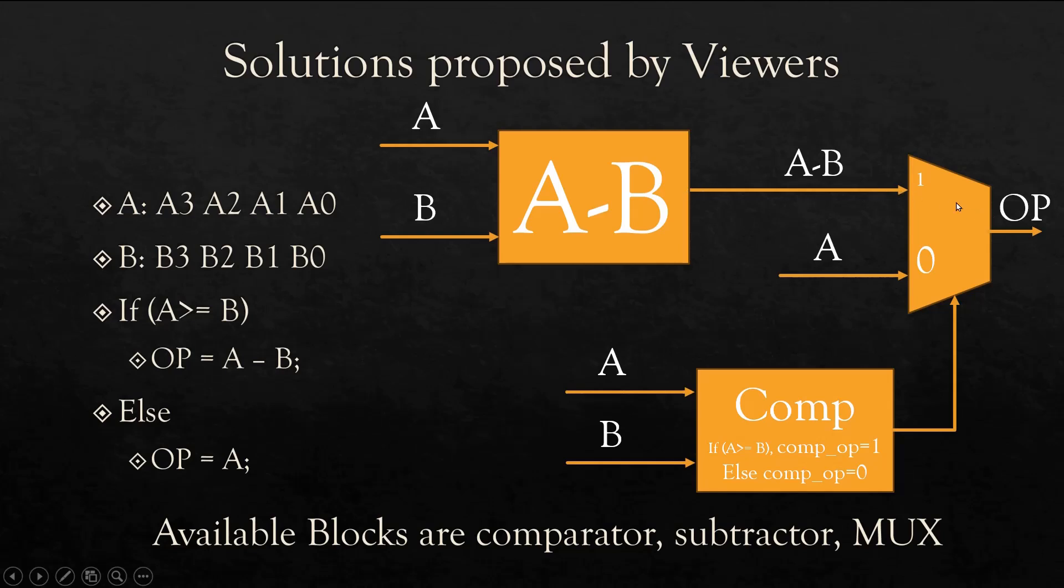So what is the expected output? A minus B. So here we will apply the output of subtractor to this input, and this will be passed to the output. If this is false, comparator will give its output as zero, so we will pass this input to the output. Here we will apply A so that A can be passed to the output.